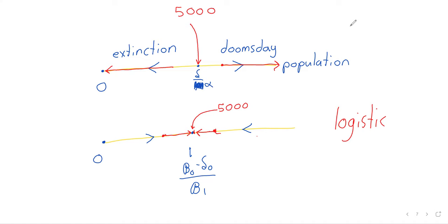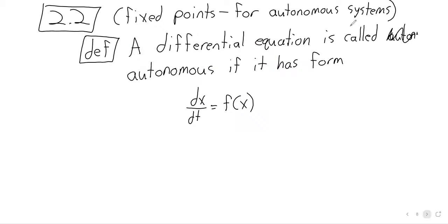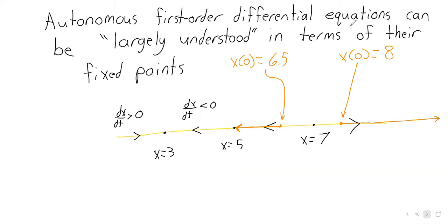We jumped a little ahead and performed this same kind of analysis with the doomsday/extinction model and the logistic model — so we've performed this kind of analysis three times already. We'll perform it again when we get to air resistance. You've probably heard the phrase terminal velocity. Terminal velocity is a fixed point, and we'll study it using this material.